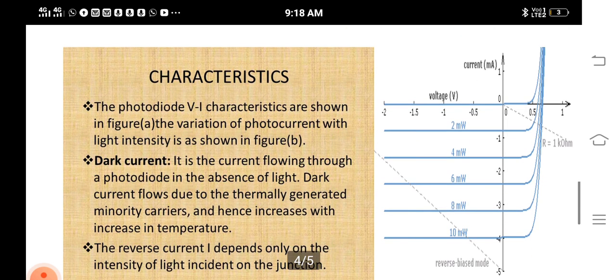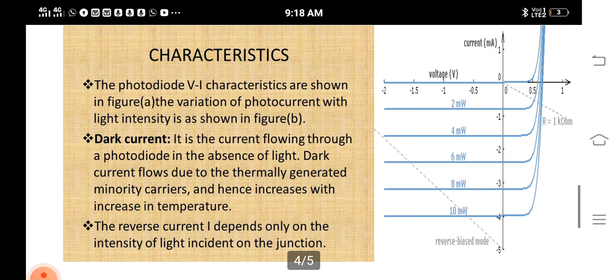The characteristics of the photodiode are shown in the figure. The variation of photocurrent is also shown. Dark current is the current flowing through a photodiode in the absence of light. Dark current flows due to thermally generated minority carriers and hence increases with increasing temperature. The reverse current depends only on the intensity of light incident on the junction.